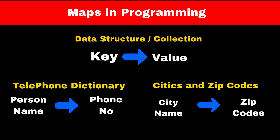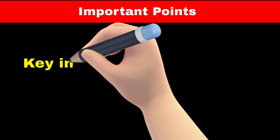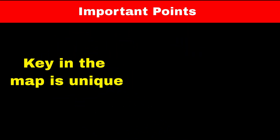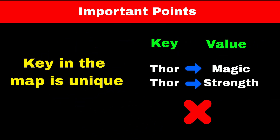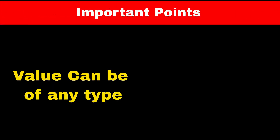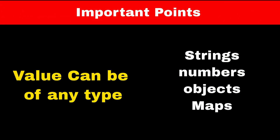Some important points to remember about maps: the key in a map must be unique, meaning you cannot have two keys with the same name or value. The value in the map can be of any type — you can store strings, numbers, objects, or even a map inside a map. That's why maps are a very powerful data structure.